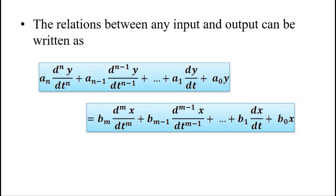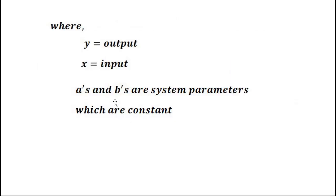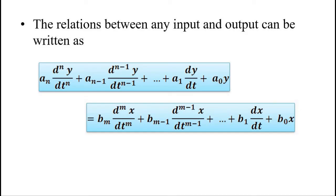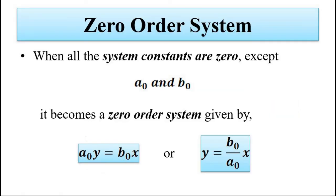On the left side we have an nth-order differential equation and on the right side an mth-order differential equation. Depending on the constant values a and b and the order of the equation, we can classify measurement systems as zero-order, first-order, and second-order. Here, y represents the output, x represents the input, and a and b are system parameters.